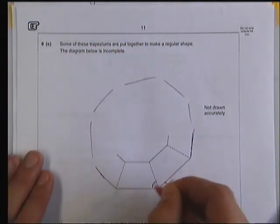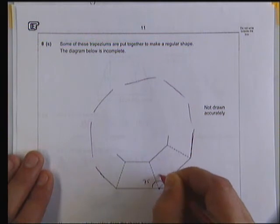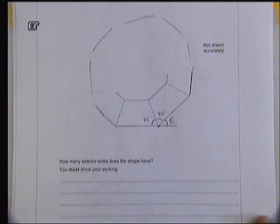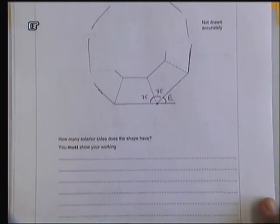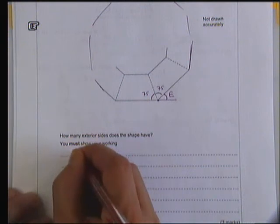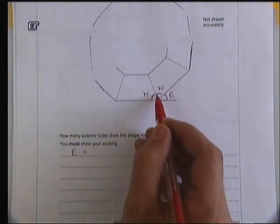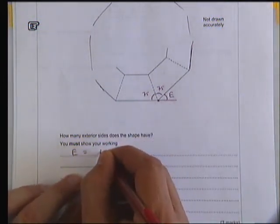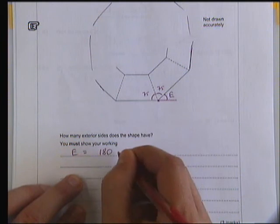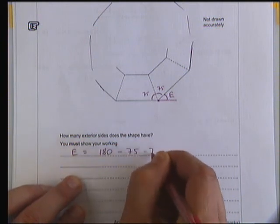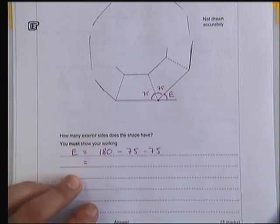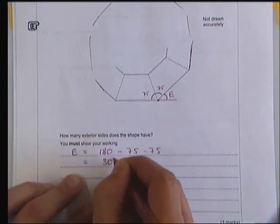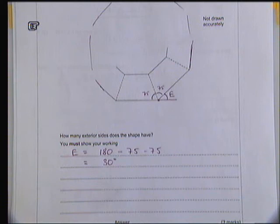Now you should be able to see that that makes the external angle that I've marked with an e a particular angle, because these three need to add up to make 180. So we have 180 minus 75 minus 75, which gives 30 degrees. So the exterior angle is equal to 30 degrees.